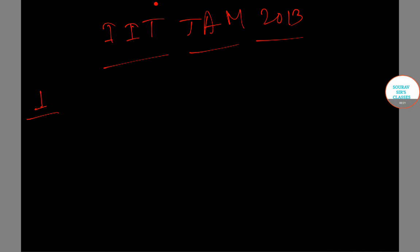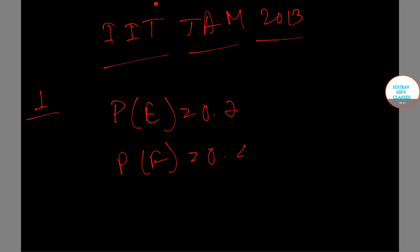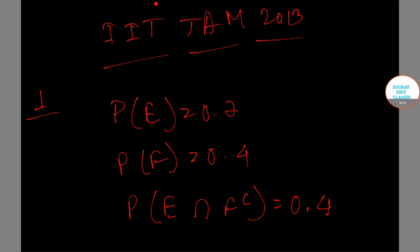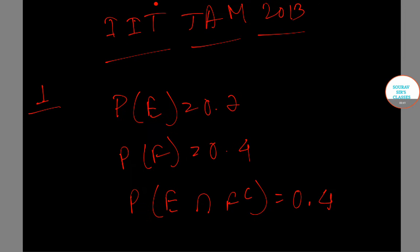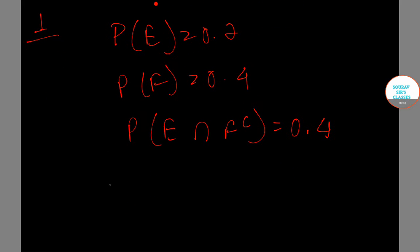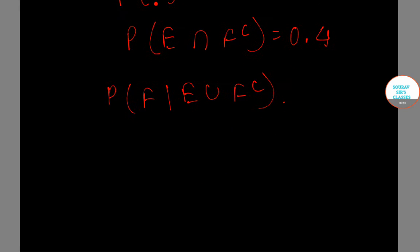In question number 1, we are given two events E and F with P(E) = 0.7, P(F) = 0.4, and P(E ∩ F') = 0.4. We are asked to calculate the probability of F given E ∩ F'. Let's see how we do this.